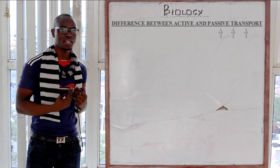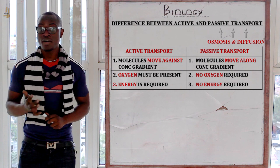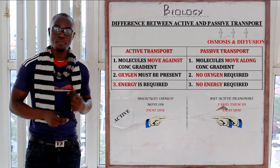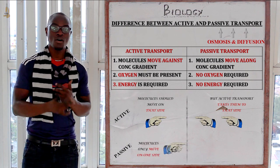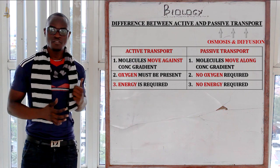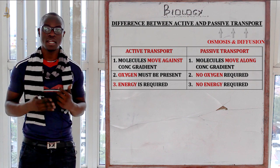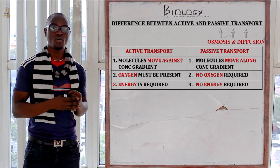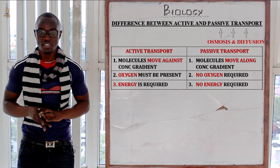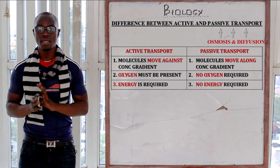Now let's compare active transport and passive transport. Active transport occurs against the concentration gradient, while passive transport occurs along the concentration gradient. Active transport is affected by oxygen concentration — more oxygen leads to more respiration, more energy production, and therefore a higher rate of active transport — but passive transport, that is diffusion and osmosis, is not affected by oxygen concentration.